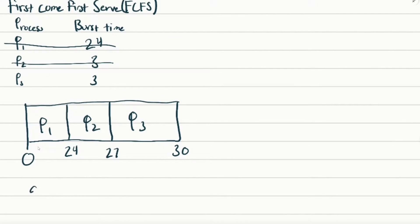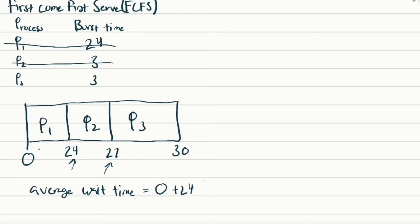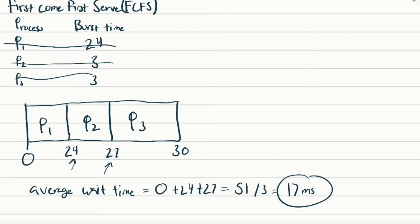To calculate the average wait time, we look at how long each process waited. P1 didn't wait at all — it got there at time 0 and started executing. P2 had to wait until time 24 to start executing, so we add 24. P3 had to wait until time 27. We add them all up: that's 51, divided by 3 processes, equal to 17 milliseconds. That's the average wait time for first come first serve.